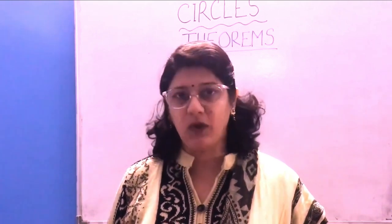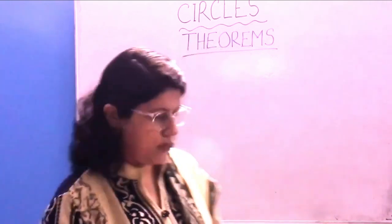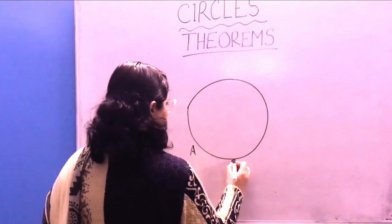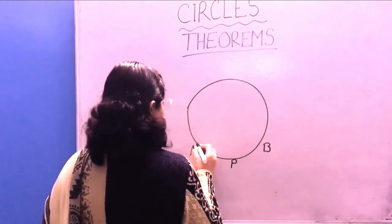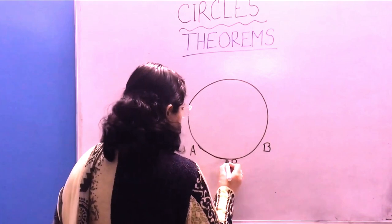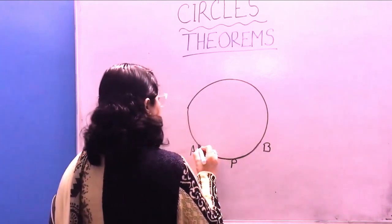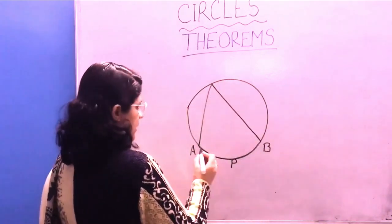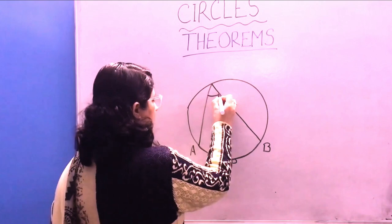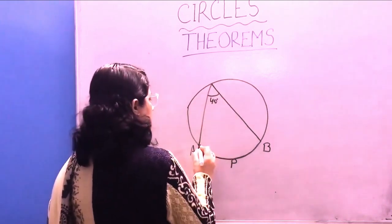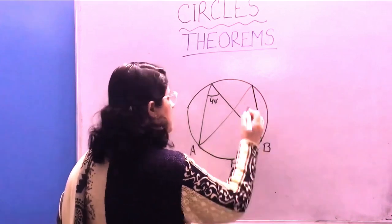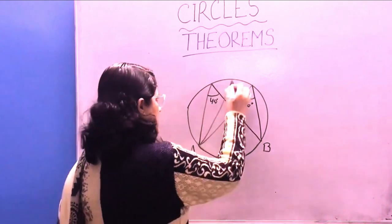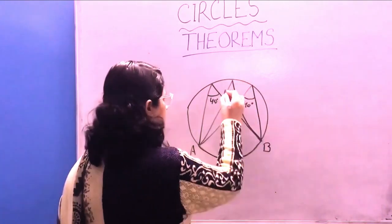The next theorem is: angles in the same segment of a circle are equal. If arc AB forms a segment, and the arc subtends an angle of 40 degrees at one point on the circumference, then at any other point on the remaining circumference in the same segment, it again makes an angle of 40 degrees.